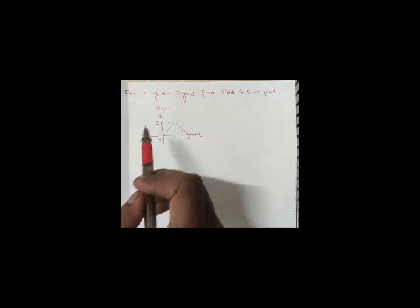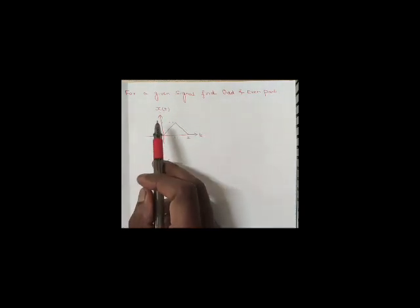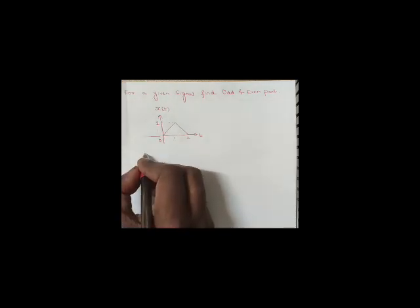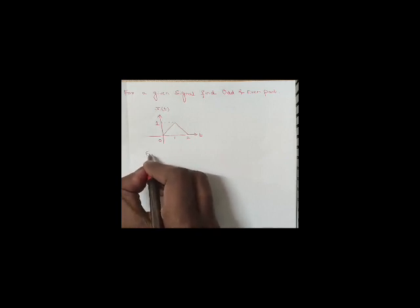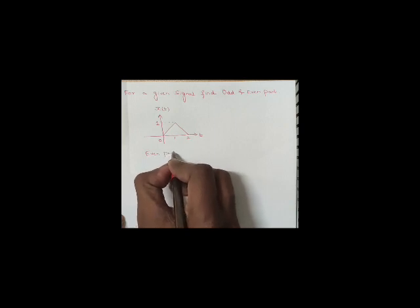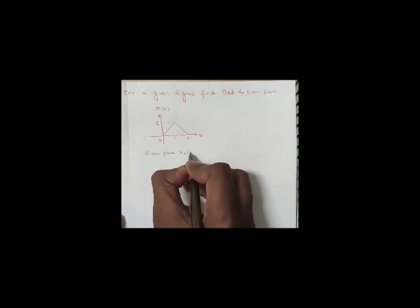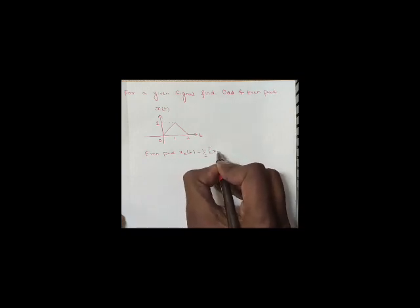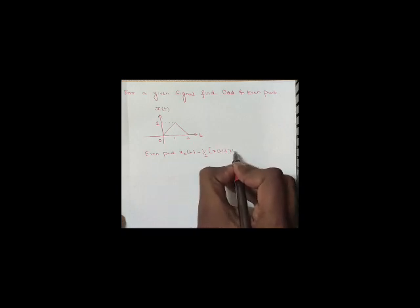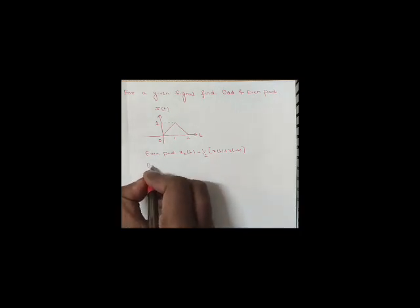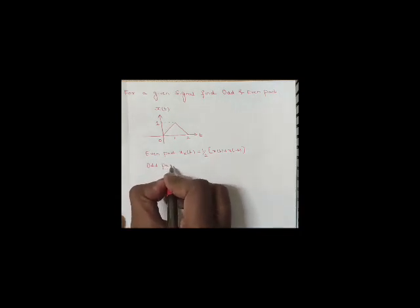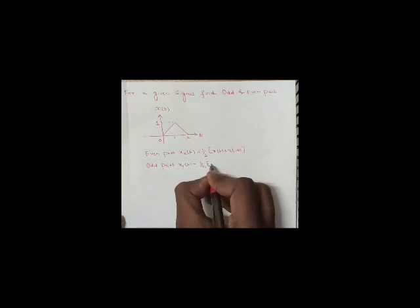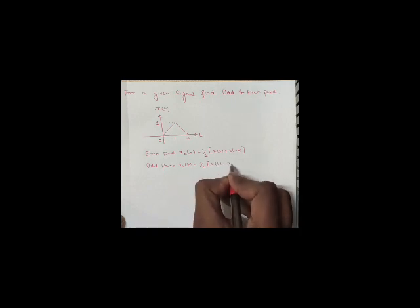You can see here the x(t) is given in this manner. We need to find the odd and even part of the given signal. The formula for even part is: xe(t) = 1/2 × [x(t) + x(-t)], and for the odd part the formula is: xo(t) = 1/2 × [x(t) - x(-t)].